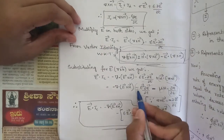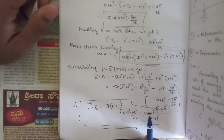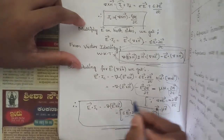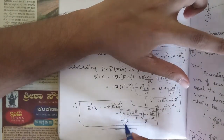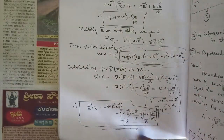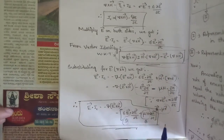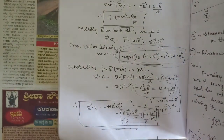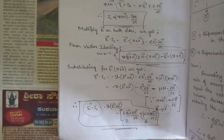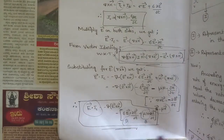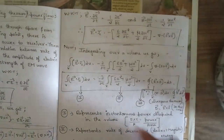Grouping these two terms together and taking the minus sign common, we get: ε·E·(∂E/∂t) + μ·H·(∂H/∂t), where εE corresponds to D and μH corresponds to B, since D = εE and B = μH. This is the relationship between electric field intensity, electric flux density, magnetic field intensity, and magnetic flux density.